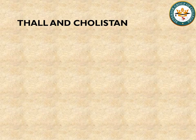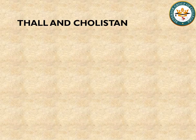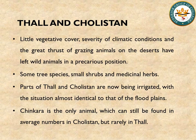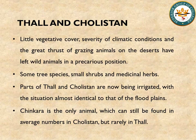First, we will discuss the wildlife of Thal and Cholistan Desert combined, since both deserts are in Punjab province. These are desert areas with arid conditions. Due to severe climatic conditions, little vegetative cover is available. And due to grazing animals, the vegetative cover is further reduced, making survival very difficult for wild animals.